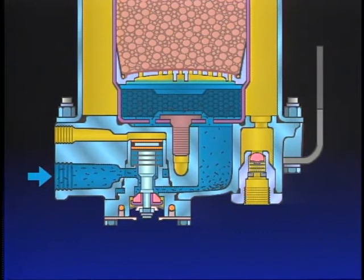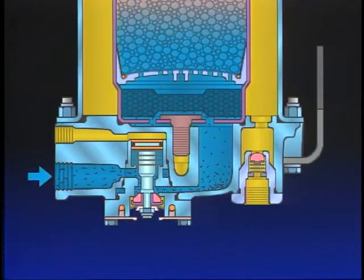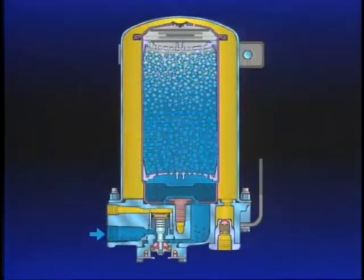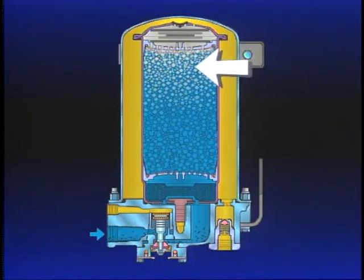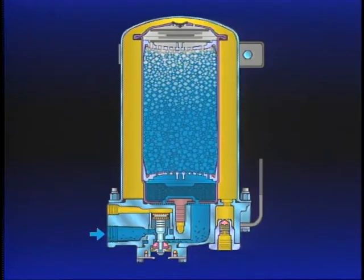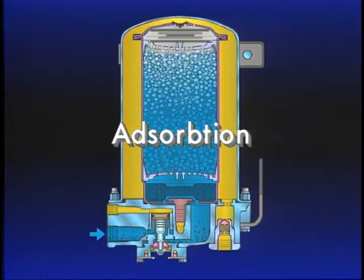Still saturated with 100% water vapor, air flows from the oil separator to the desiccant cartridge. Air flowing through the desiccant drying bed becomes progressively drier, as the water vapor adheres to the desiccant material in a process known as adsorption.